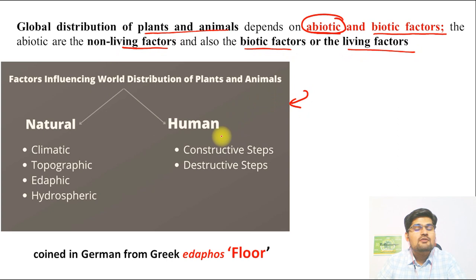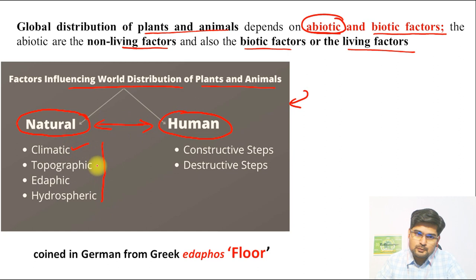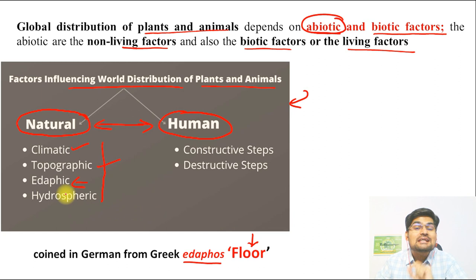There is an interesting flow diagram you can use for answer writing. The factors influencing world distribution of plants and animals can be divided into natural and human categories. Under natural, we have climate, topography — covering physical geography aspects like geomorphology — and edaphic factors. The word 'edaphic' comes from the Greek word 'edaphos,' meaning floor, referring to soil and related factors. We also have hydrospheric factors, that is, the water realm.